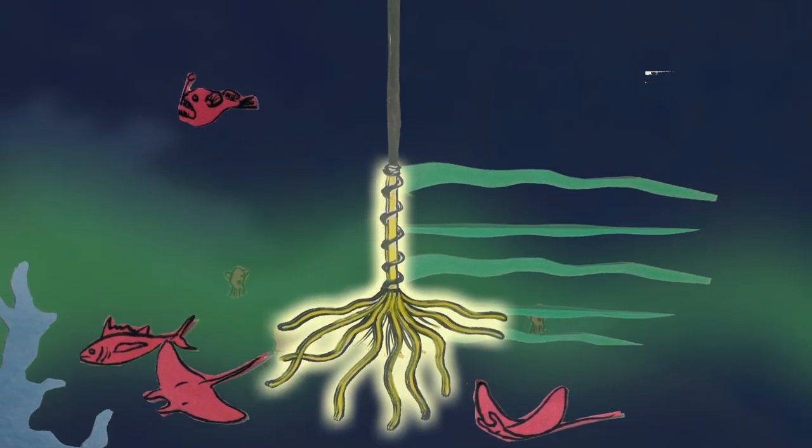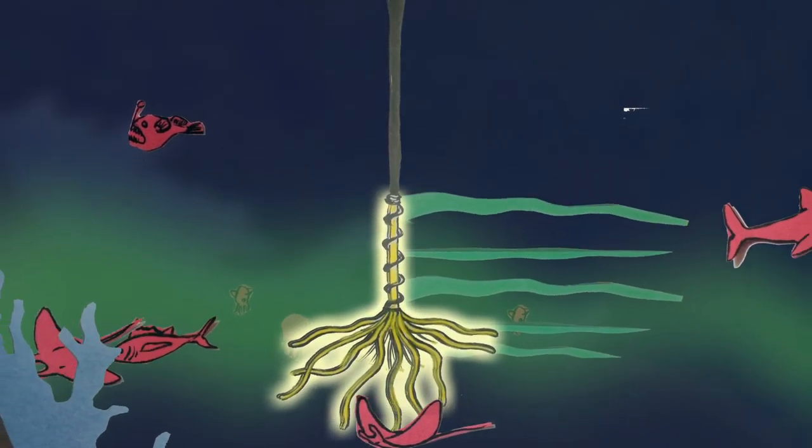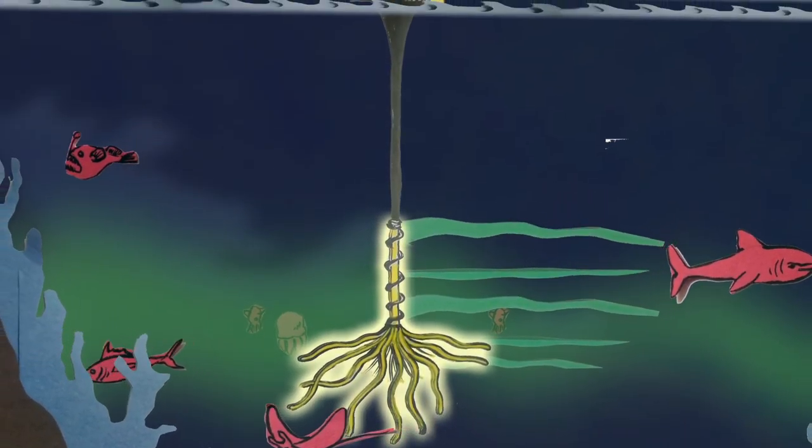Kelp creates habitat and food for foraged fish, in turn enabling a food pyramid for game fish and predators.